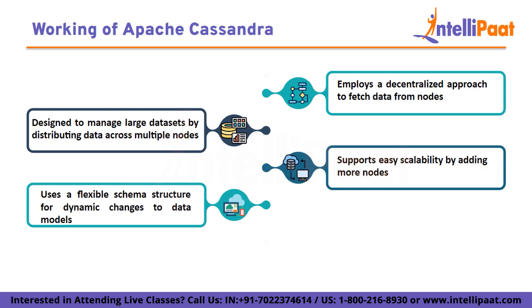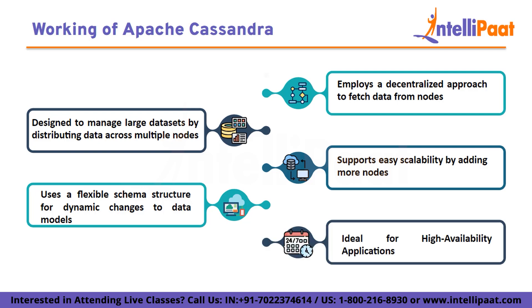Cassandra's architecture supports horizontal scalability, effortlessly accommodating data growth by adding more nodes. Data replication across nodes enhances availability and data durability. Its tunable consistency level enables balancing between read and write performance and data consistency based on application needs.